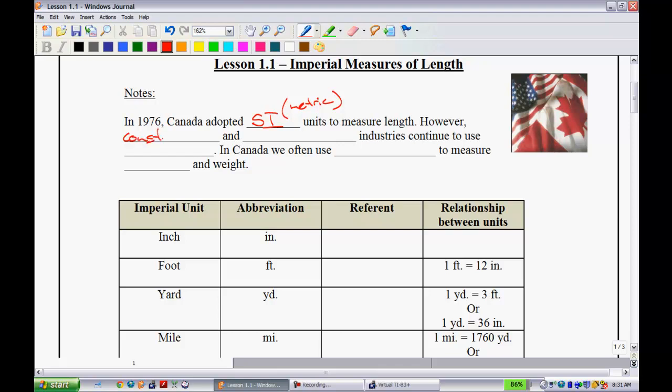However, construction and manufacturing industries continue to use imperial units. For instance, you go to a construction site and start talking centimeters and meters, people are going to look at you pretty funny. In Canada, we often use imperial units to measure height and weight. We're so used to seeing our height in feet and inches and weight in pounds. So what we're going to be doing is trying to give you an idea of how to go back and forth. It's actually a really useful skill.